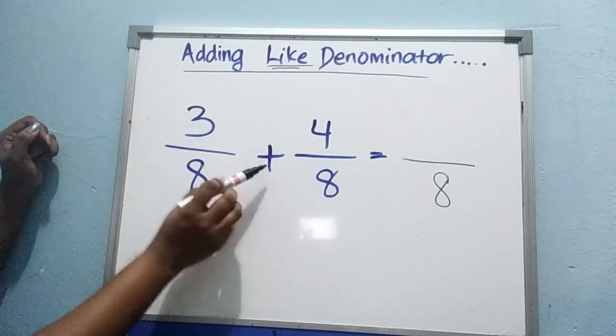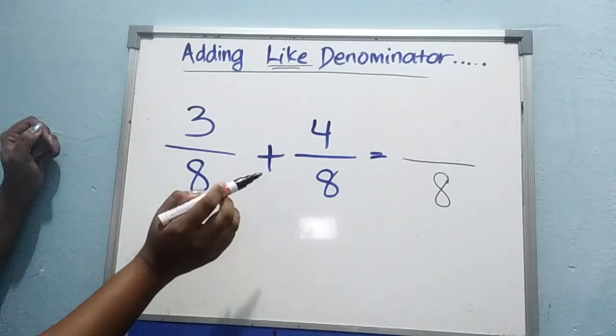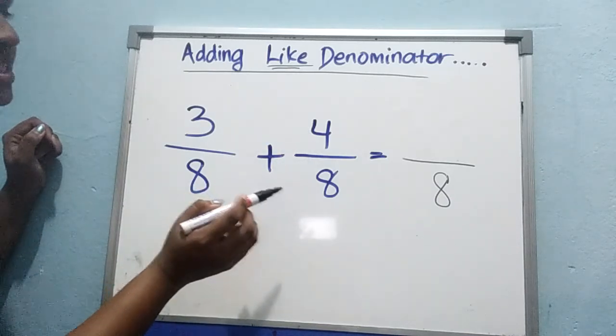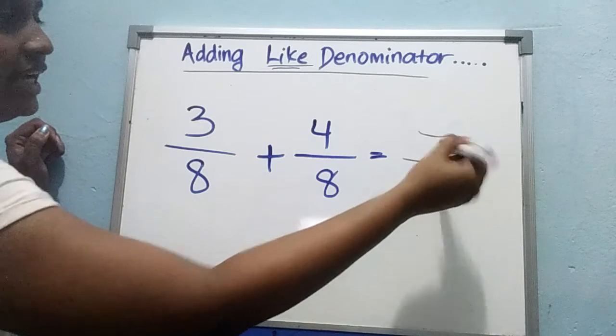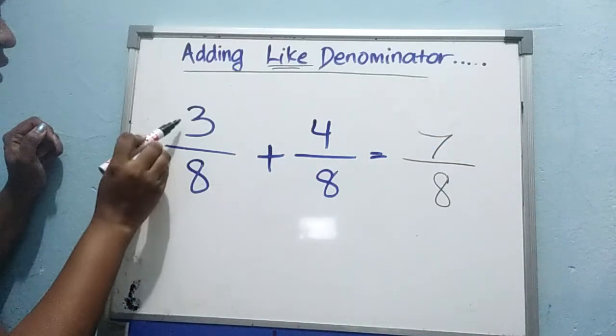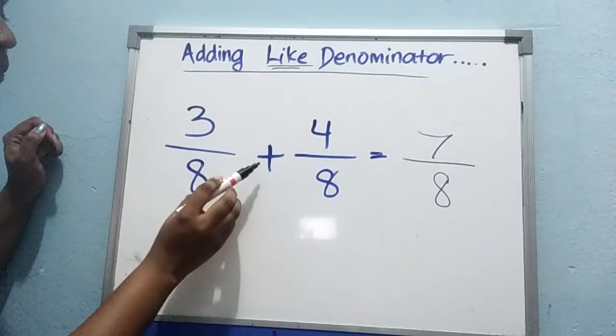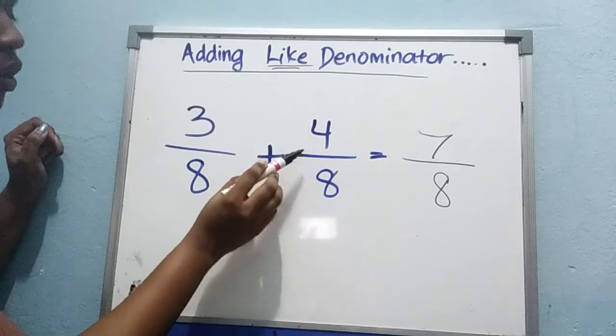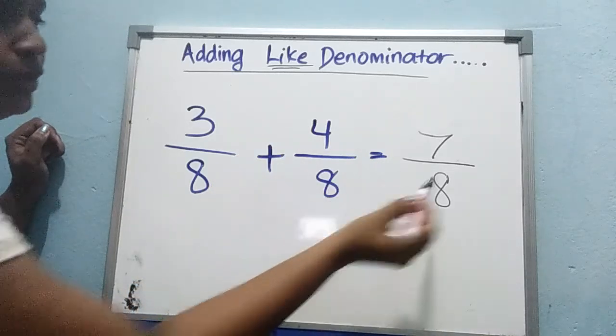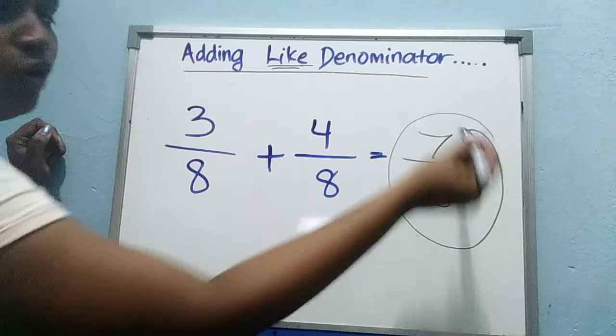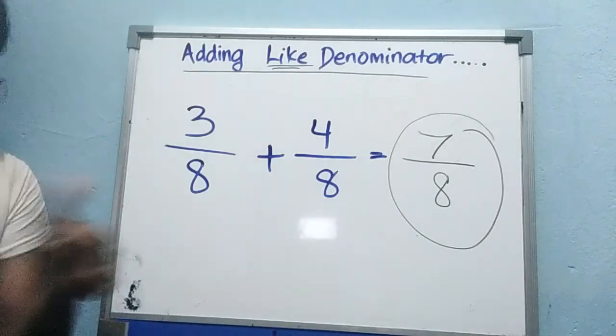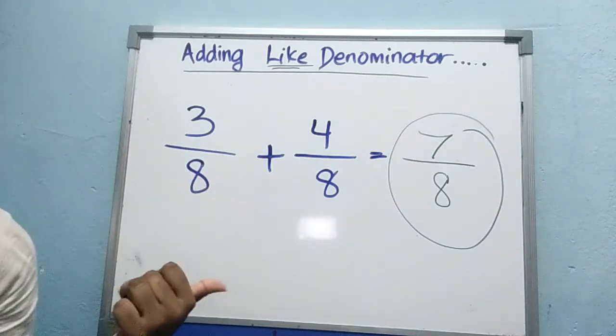Now, what is 3 plus 4? 3 plus 4 is 7. So, 3 over 8 plus 4 over 8 equals 7 over 8. That's all. Easy? Clear?